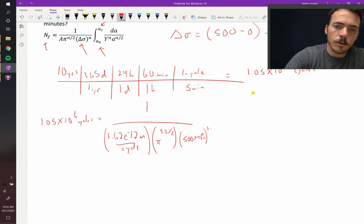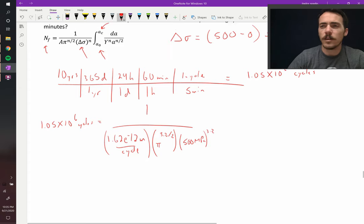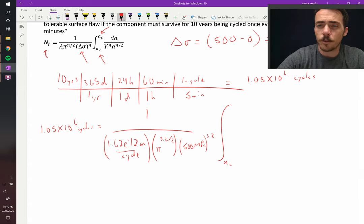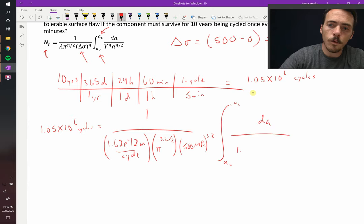This is multiplied by the integral from our largest critical flaw size, which we're going to be solving for, all the way up to AC, and then we're going to take DA over 1.12 to the 3.2, multiplied by A to the 3.2 divided by 2.